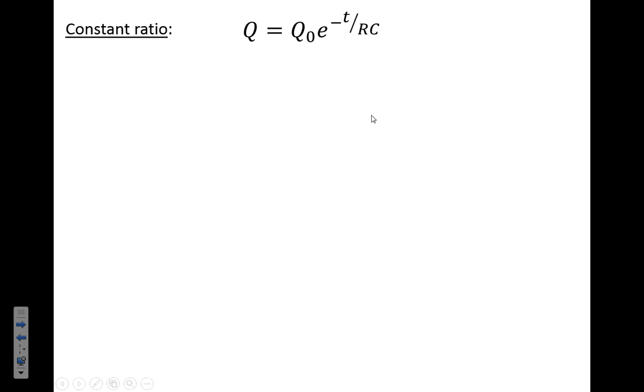To start with the formula, what we're going to do is divide by the initial charge we've got here. So we've got just a fraction of charge that is left after T seconds.